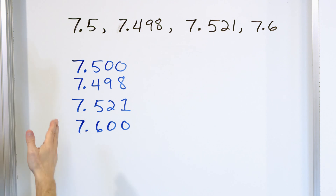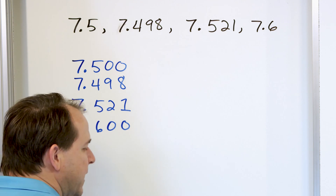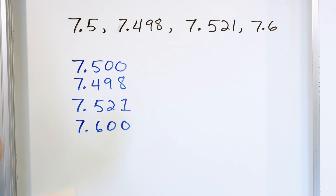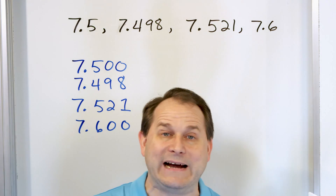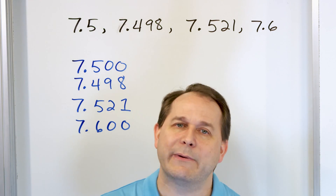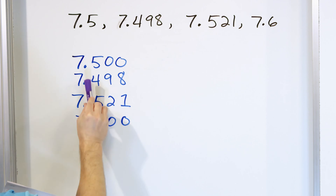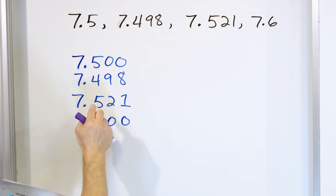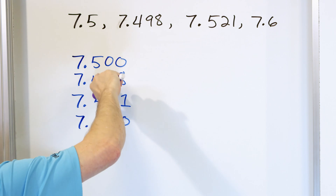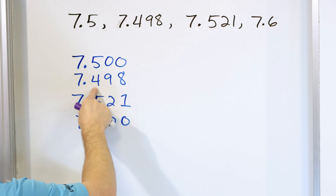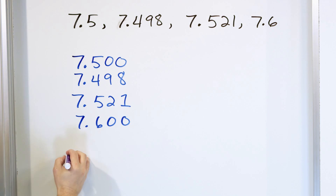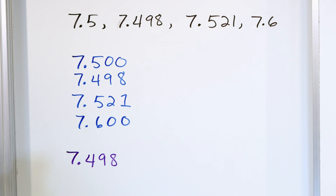We're not going to add them up or anything; the reason we're stacking them will become clear in just a minute. In order to find the smallest number, we compare all the whole numbers first, just like in the last lesson. All of the whole numbers are 7, so they're all tied. Now we have to look at tiebreakers — the tenths place. The smallest number in that column is a 4, compared to 5, 5, and 6. So 7.498 is the smallest number.